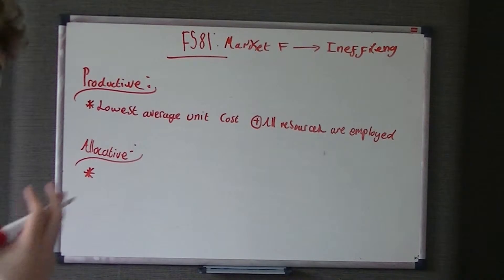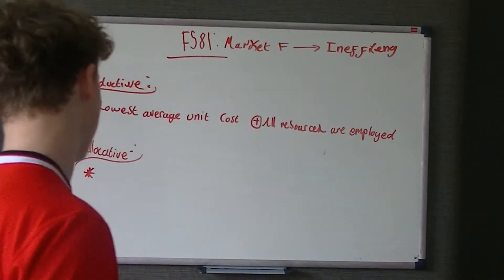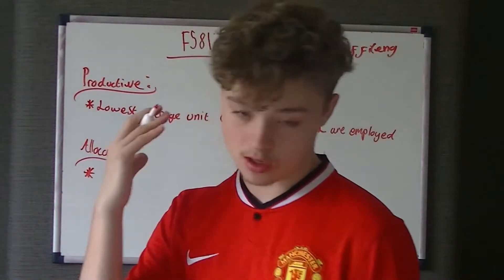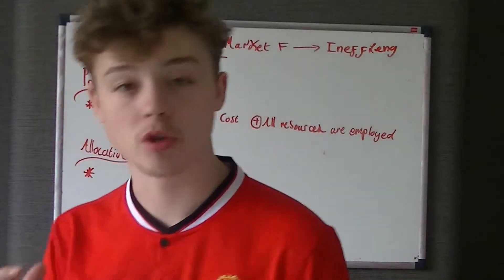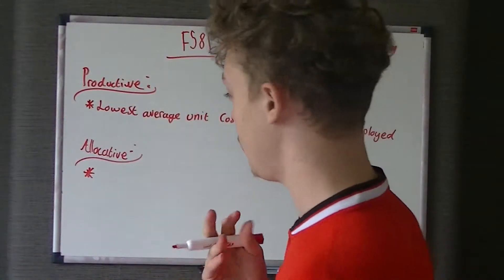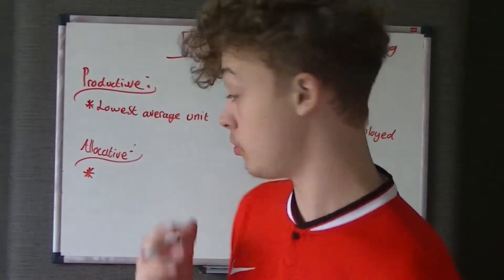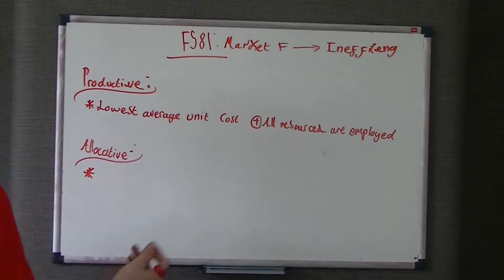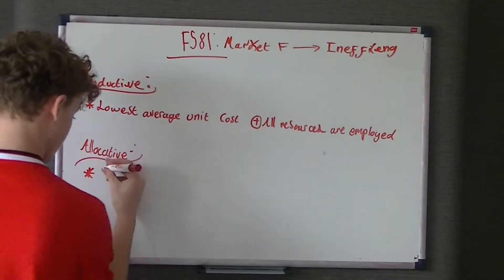When an economy is productively efficient, it's producing at the lowest unit cost. When we talk about allocative efficiency, we're assuming that the consumer's preferences are met. For example, you can have a brilliant economy doing well in terms of productive efficiency but not producing what consumers actually want. Because of consumer sovereignty, the consumer is king — they say what gets produced. If there's no demand for the product, there's no point producing it no matter how low your average cost.